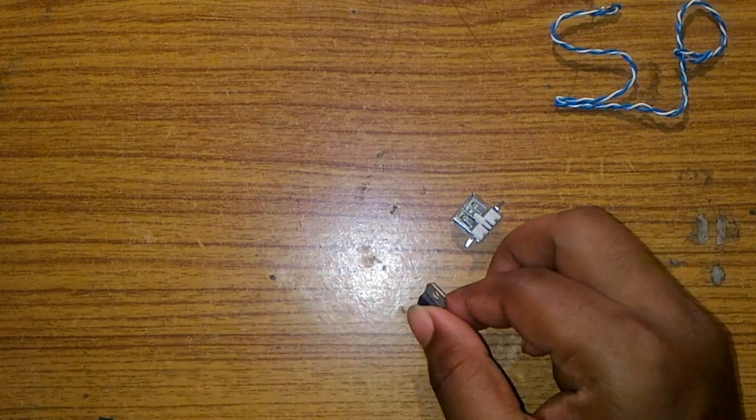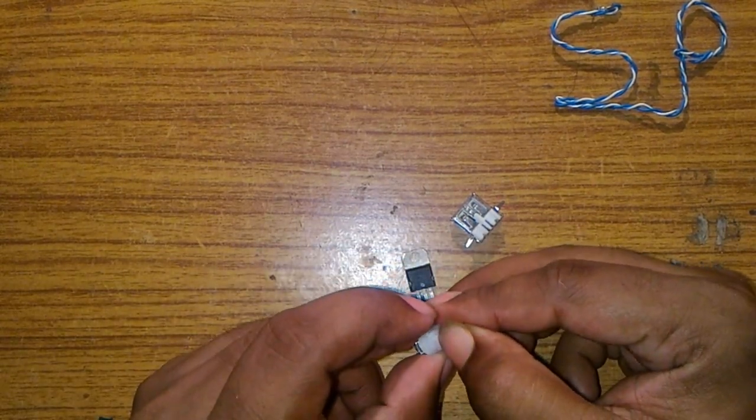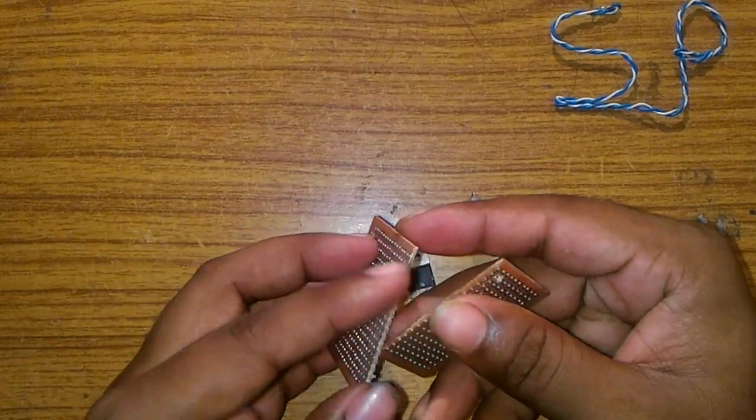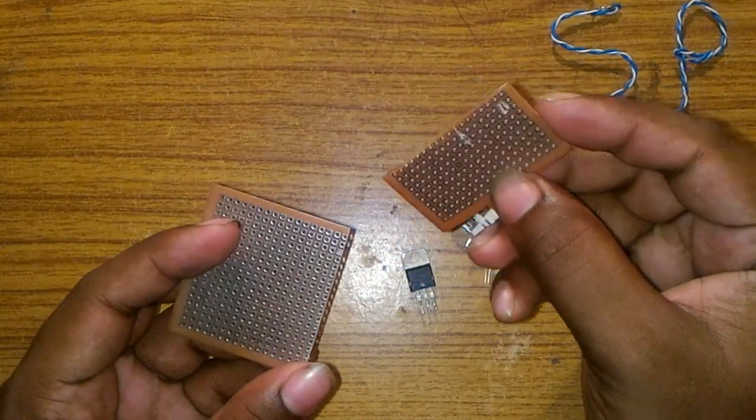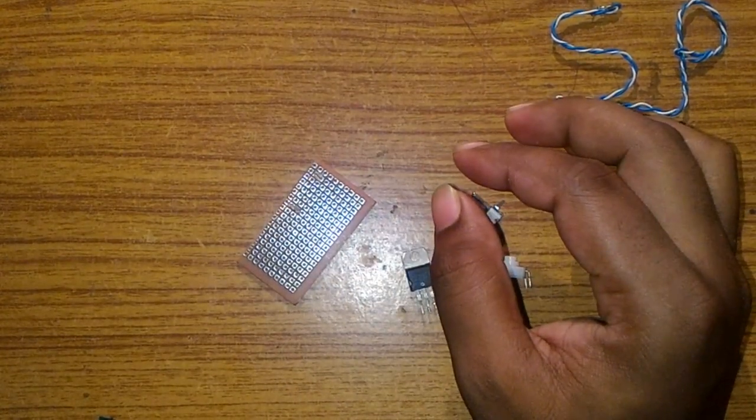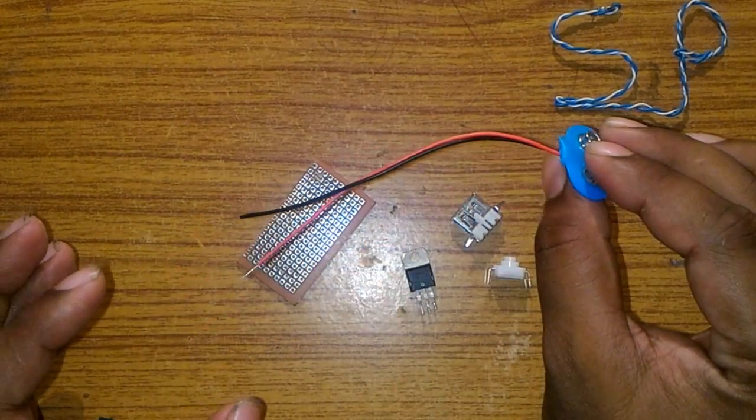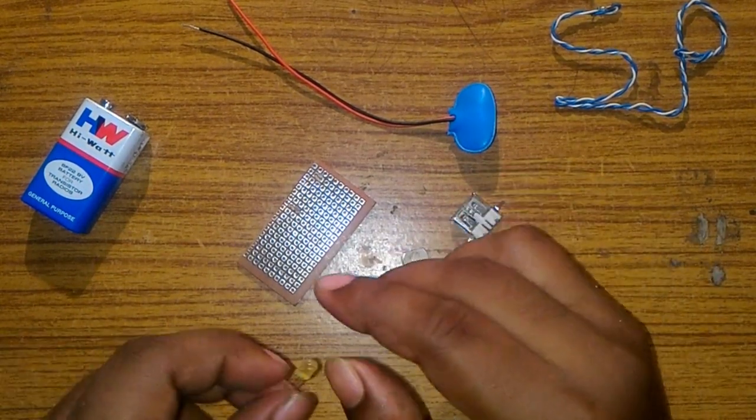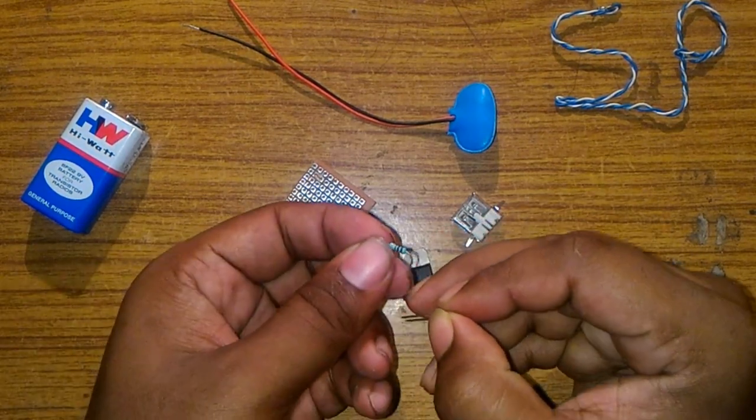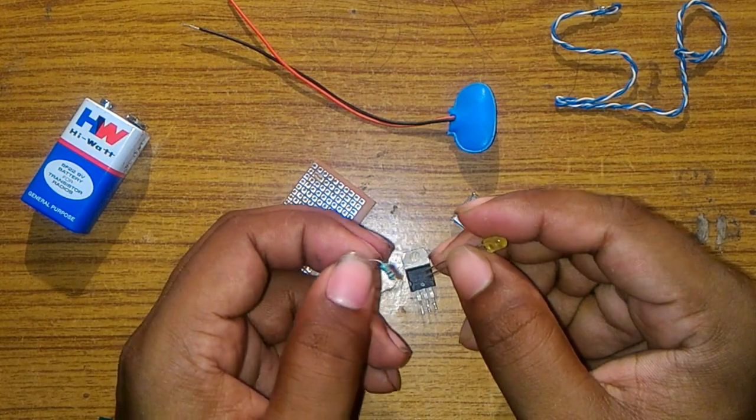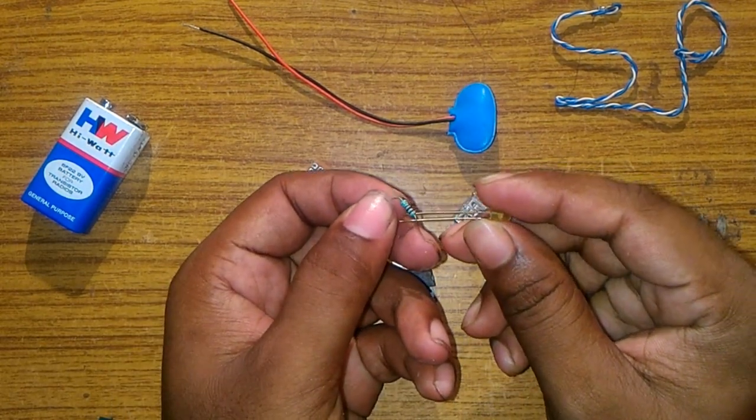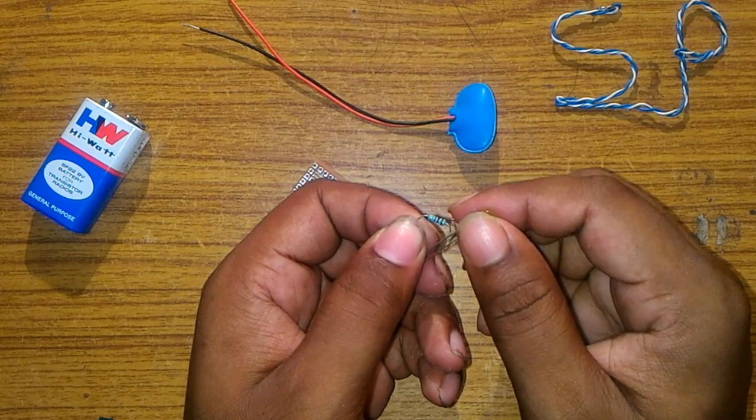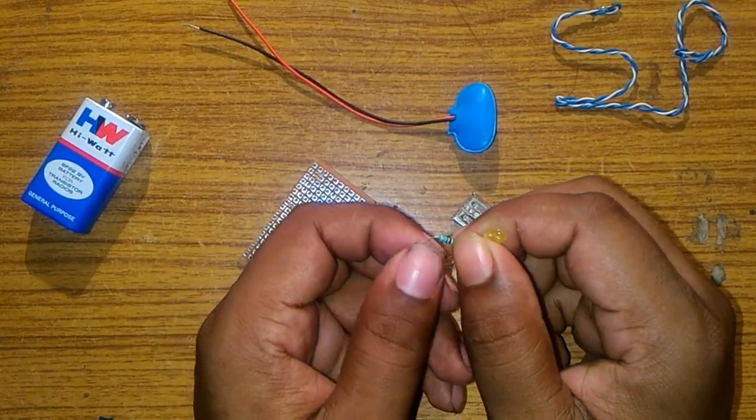Then you need a push switch, a PCB board, a battery holder, a 9 volt battery, an LED, and a 220 ohm resistor. You can use the LED or not, that depends on you. It is only for indication purpose, to show that our power bank is working or not.